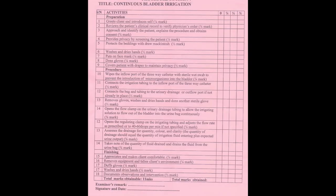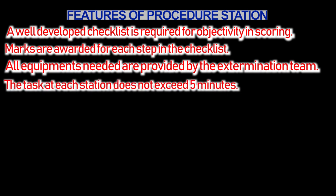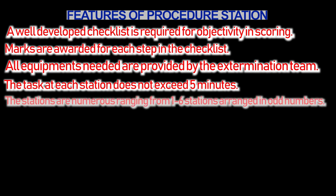Features of procedural station. A procedural station comprises the following features: a well-developed checklist is required for objectivity in scoring; marks are awarded for each step in the checklist; all equipment needed are provided by the examination team; a minimum of five minutes should be spent by each candidate at every procedure station; and the stations are numerous, ranging from one to six, arranged in odd numbers.